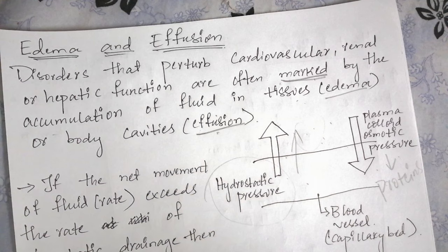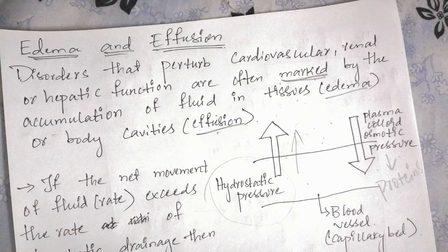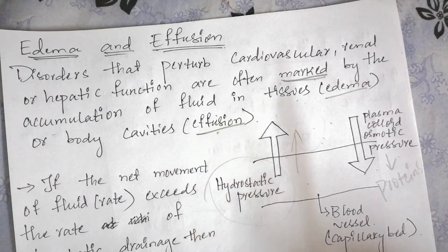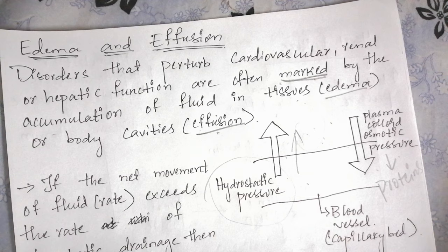Edema and effusion is basically the movement of fluid out of the blood vessel into the interstitial spaces or into the body cavities. If it occurs in the interstitial spaces and tissues, it is called edema. If it occurs in body cavities like pleural spaces, pericardial space, and peritoneal spaces, it is called effusion.